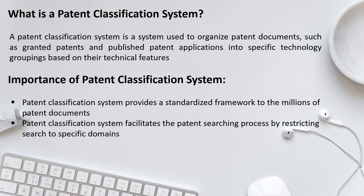The second point is that the patent classification system facilitates the patent searching process by restricting searches to specific domains. While conducting patent searches, you can restrict your search to specific domains. For example, if I want to search for motors of an EV vehicle, I can restrict my patent search using the classification codes for both motors and vehicles, making my search easier and returning only relevant patent documents.